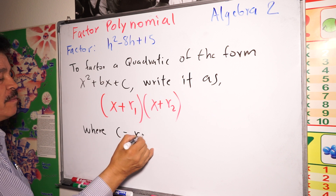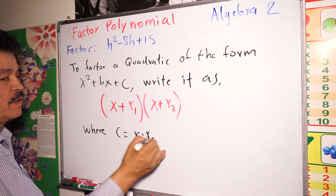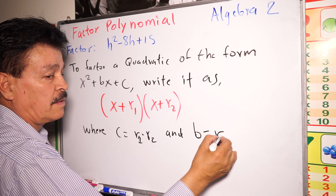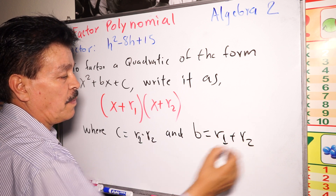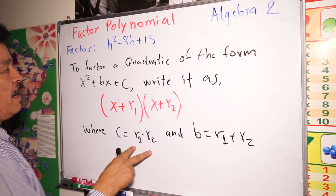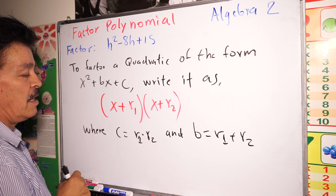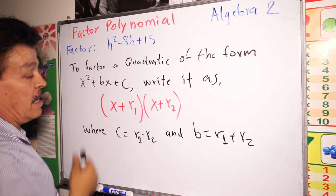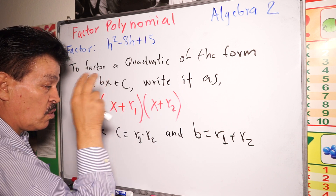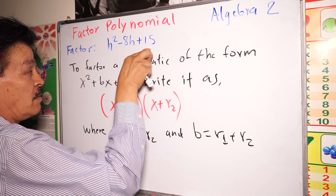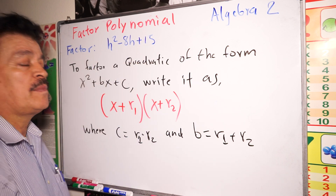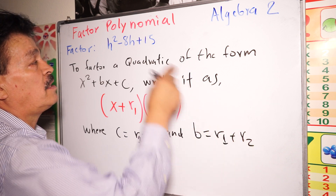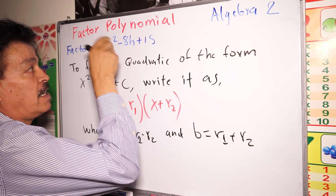Here's the concept: c equals r1 times r2, and b equals r1 plus r2. So when you multiply the two factors they must equal c, and when you add those same factors they must equal b — in this case, negative 8.